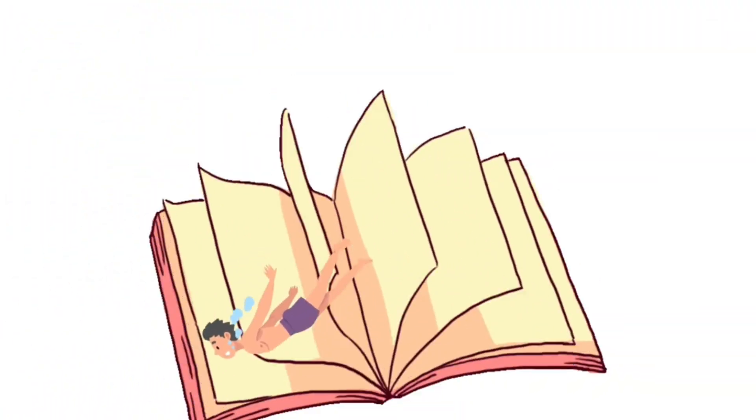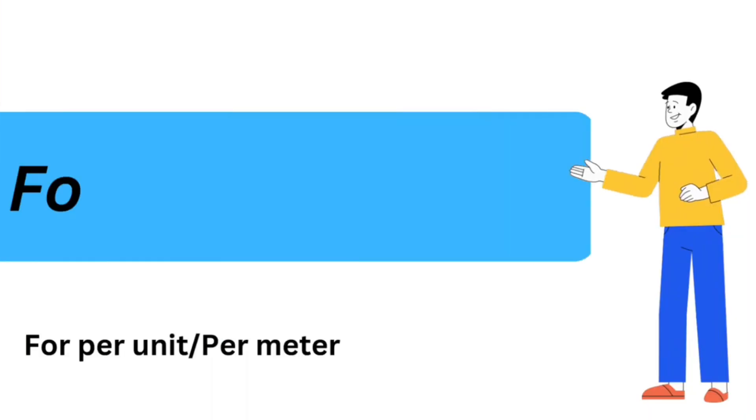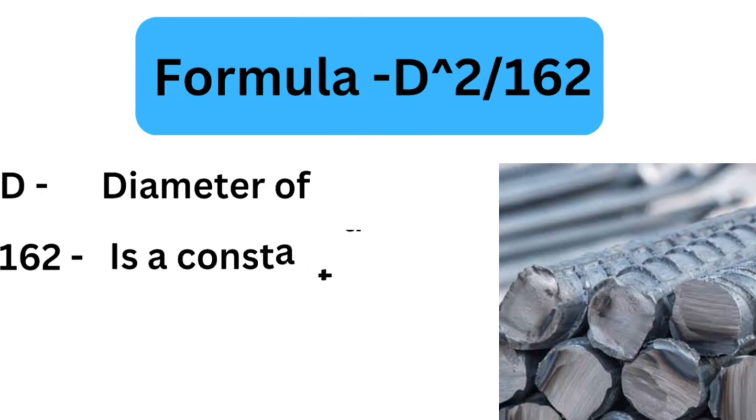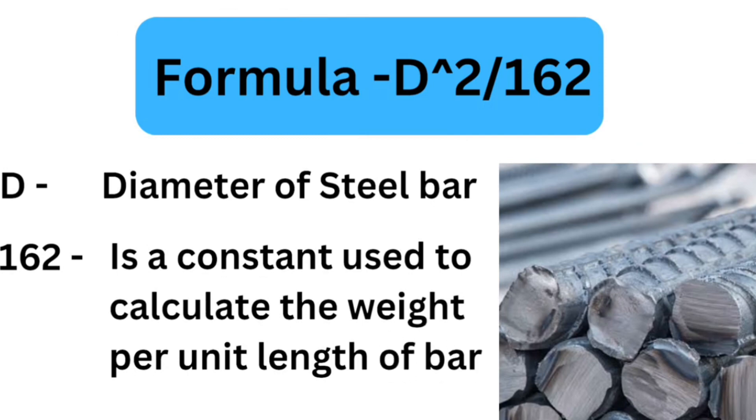So, let's dive in and learn how to perform this calculation step by step. The formula for weight calculation per unit or per meter of steel reinforcement bars is D squared divided by 162. D represents the diameter of the bar and 162 is a constant used to calculate the weight per unit length of the bar.